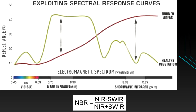Here you can see a plot where the horizontal scale shows the electromagnetic spectrum and the vertical scale shows reflectance values in percentage. The green line shows healthy vegetation and the red line shows burn areas. There are two key differences — one in the near infrared side and another in the short wave infrared side.